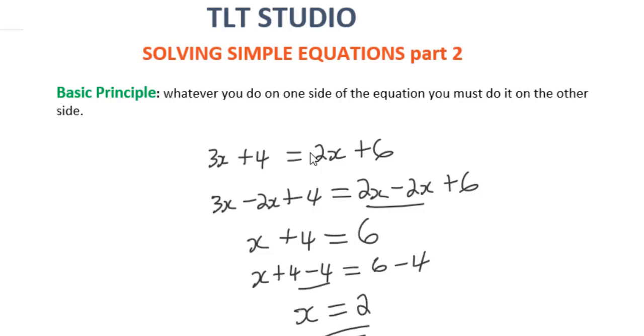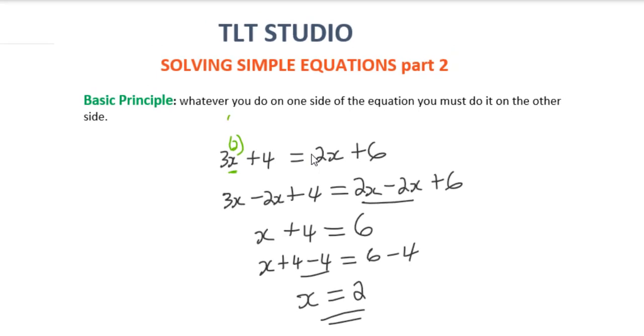So x here is no longer unknown. x is now 2. So 3 times 2, 6 plus 4 is 10. So the left hand side is equal to 10. Let us check the right hand side now. So x equals 2. So x is no longer unknown here. So this is 2 times 2 which is 4 plus 6 which is 10. So in this case, x equals 2 is indeed correct.